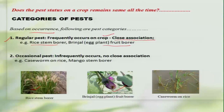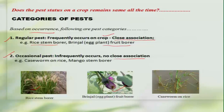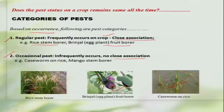Some pests can be called occasional pests — their occurrence is not frequent and they do not have a close association with the crop. For example, the rice caseworm. We may not expect this pest to occur whenever the crop is grown, but at the same time, it may suddenly appear and cause economic damage.